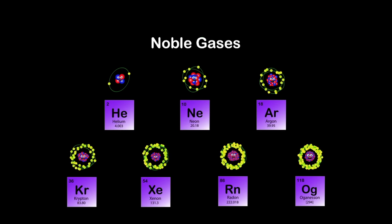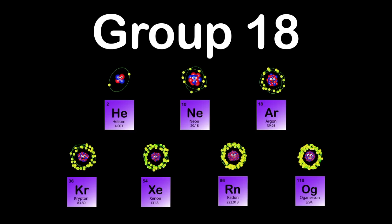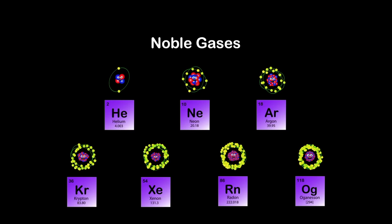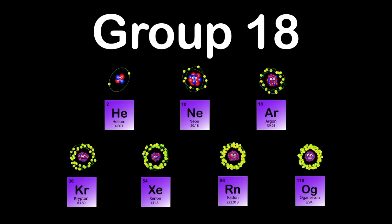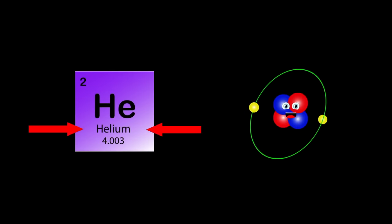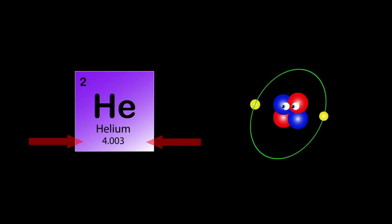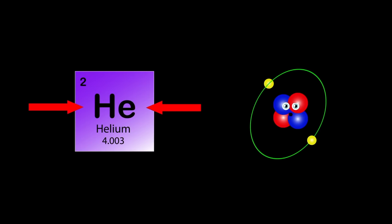We are the noble gases in group 18, with six elements and a seventh which is predicted to be. We are the noble gases in group 18 — we make up a group of chemical elements with similar properties. My name is Helium, atomic number 2, my atomic mass is 4, my symbol is He.